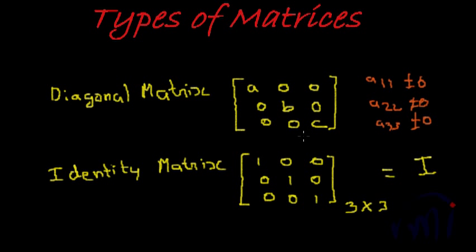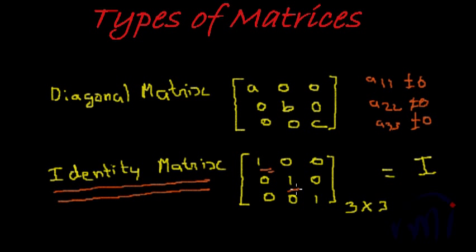A special case of a diagonal matrix is the identity matrix. Like a diagonal matrix, only the diagonal elements are nonzero and everything else is zero, but additionally, all diagonal elements are equal to one. Such a matrix is called an identity matrix and is typically denoted by the capital letter I, which is reserved for identity matrices, so avoid using it to denote any other matrix.